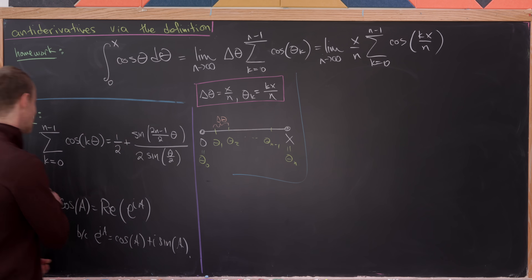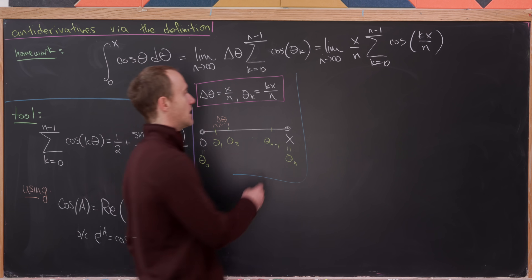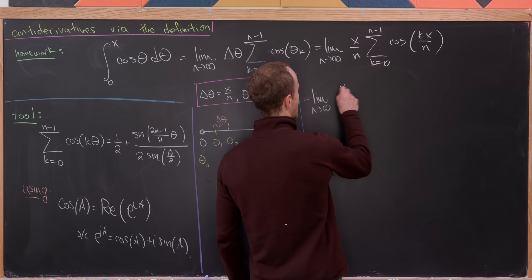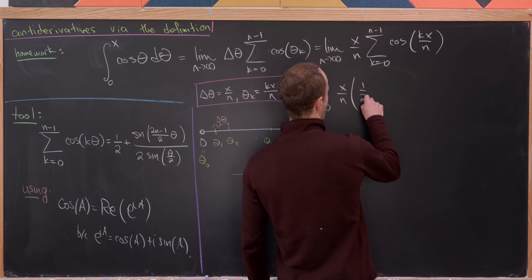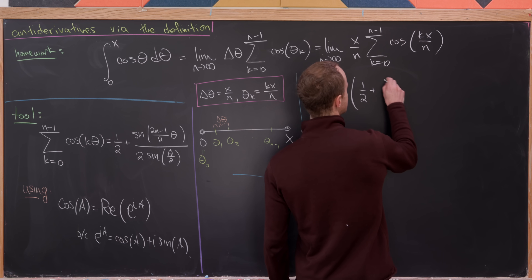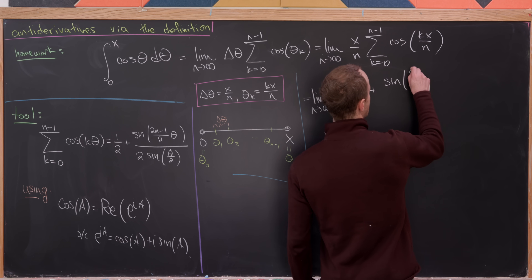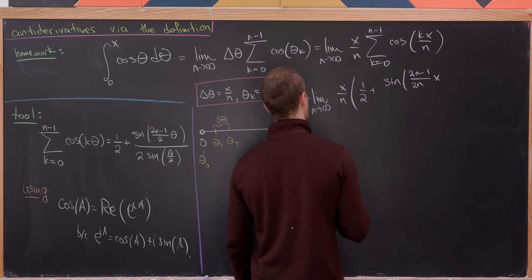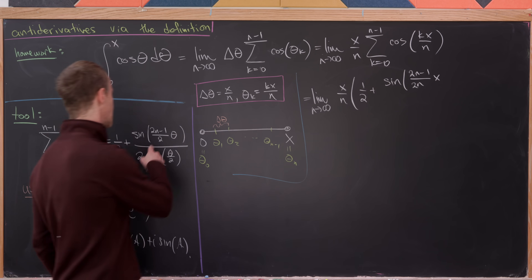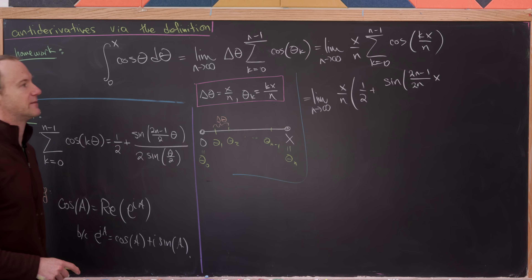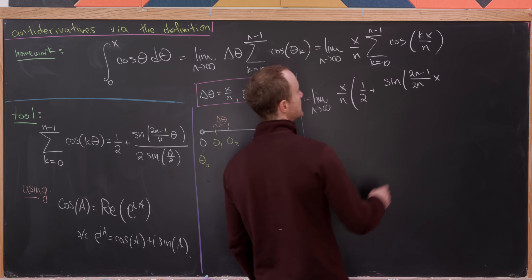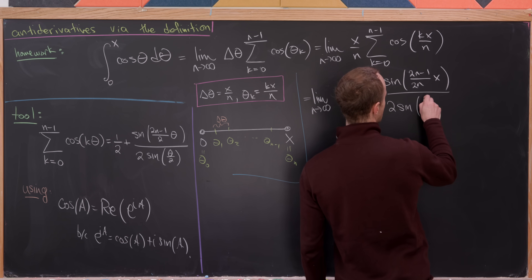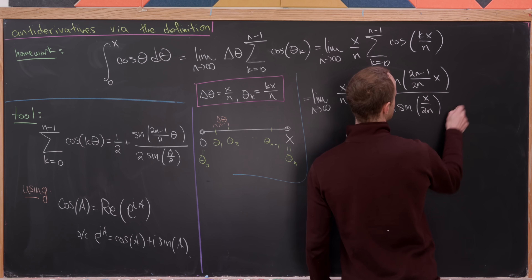From here we can use our identity to rewrite this sum. We get the limit as n → ∞ of x/n times [one-half plus sin((2n−1)/(2n) · x) over (2·sin(x/(2n)))], where the role of θ is played by x/n.